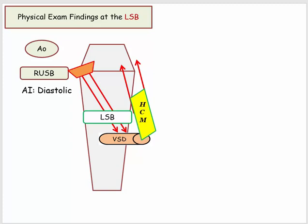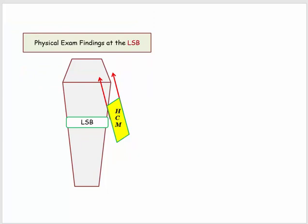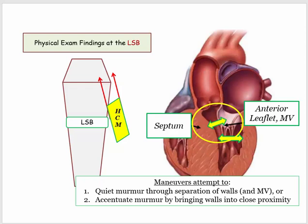Aortic regurgitation does radiate to the left sternal border, but this is a diastolic murmur, so there should be no confusion with that diagnosis. That leaves us with hypertrophic cardiomyopathy at the left sternal border. Any question will include clarifying features such as syncope in the young athlete and maneuvers that impact the outflow gradient. The exam maneuvers can do two things: quiet the intensity of the murmur through separation of the ventricular walls, or accentuate the murmur by bringing the walls into closer apposition.